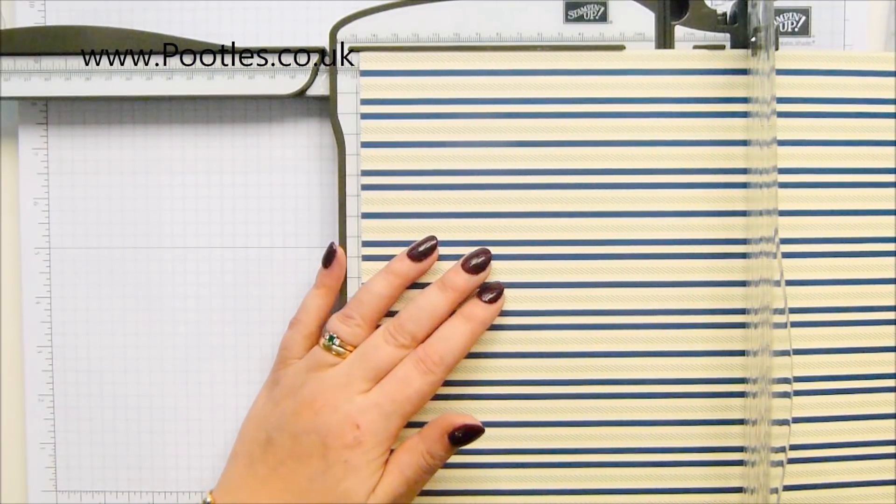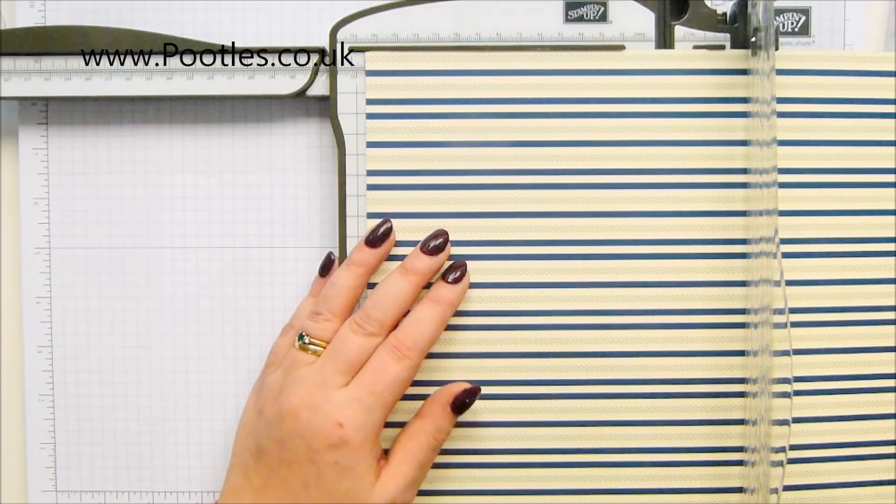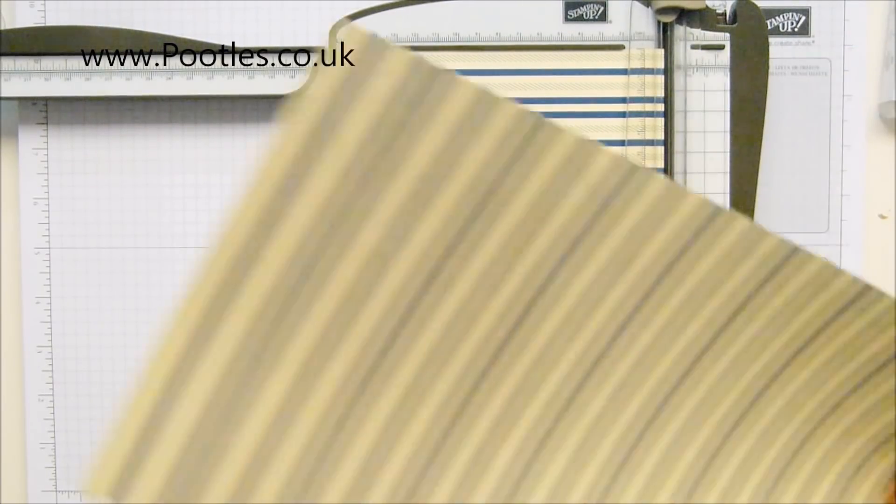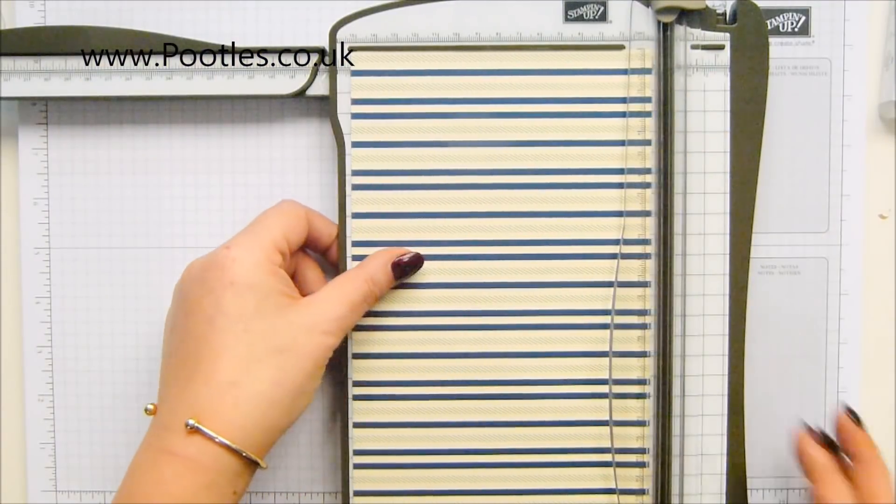My tip for you is start with your largest measurement, so that's 5 and three quarters. Cut that, so it leaves you with one nice big bit, and then cut your shorter bits. So 1 and three quarters. Then you will get a pattern that matches for start and you'll get some nice big pieces left over. If you were to do it the other way, you'd end up with lots of long thin bits left over. So that is my big tip.